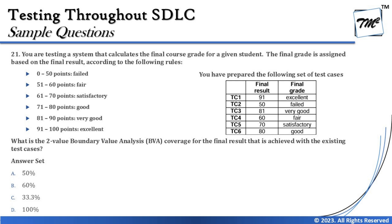The question says: you are testing a system that calculates the final course grade for a given student. The final grade is assigned based on the final results according to the following rules. There are different equivalence partitions: 0 to 50 is Failed, 51 to 60 is Fair, 61 to 70 is Satisfactory, 71 to 80 is Good, 81 to 90 is Very Good, and 91 to 100 is Excellent.